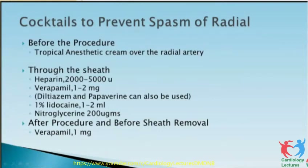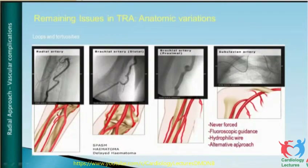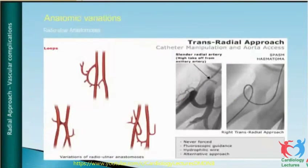These are loops and tortuosities — you can see loops here. Spasm, hematoma, and delayed hematoma may occur. To overcome these loops, never force. Fluoroscopic guidance is important and use a hydrophilic wire. An alternate approach should not be hesitated — do not risk complications. There are alpha, beta, and theta loops, and by various catheter maneuvering techniques, you can overcome these loops.